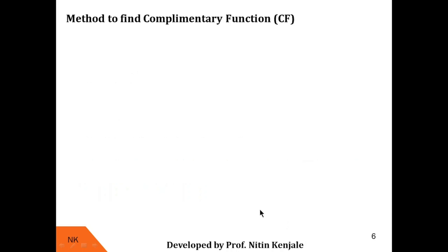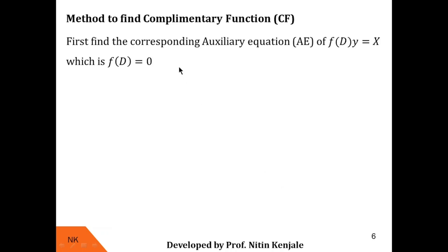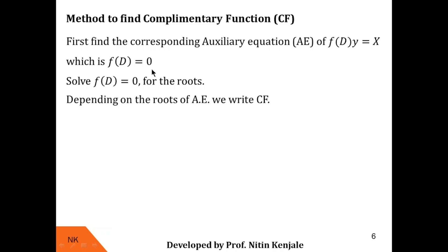Let us see the method to find the complementary function. For f(D)·y = X, we first write the corresponding auxiliary equation: f(D) = 0. We then solve this equation for values of D, which we call roots. Depending on the nature of the roots — real and distinct, real and repeated, or complex conjugates — we write the corresponding complementary function.